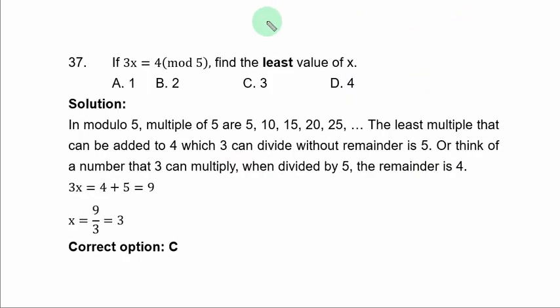Question 37. If 3x ≡ 4 (mod 5), find the least value of x. Solution. You can do this using 2 approaches.